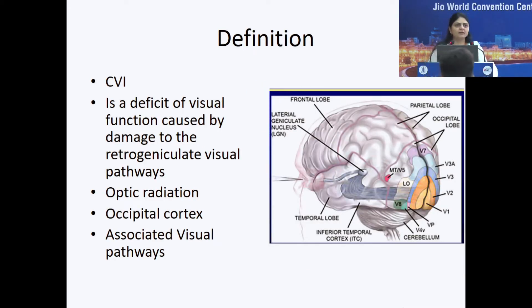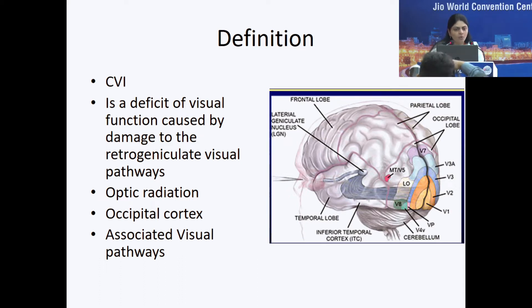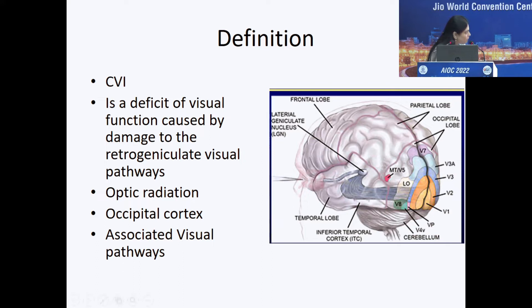Even though the condition has been defined, I am going to redefine it in a more anatomic way so that as we go along the pathway, we can discuss where, how, and how much is affected. That's what will give us the etiology and pathogenesis. Let me redefine it as a deficit of visual function caused by damage to any retrogeniculate pathway. Here is the lateral geniculate body, and from here onwards — the optic radiation, the occipital lobe, and the connections of the occipital lobe onwards — which subserve higher visual functions. Any pathway there affected will give rise to CVI.